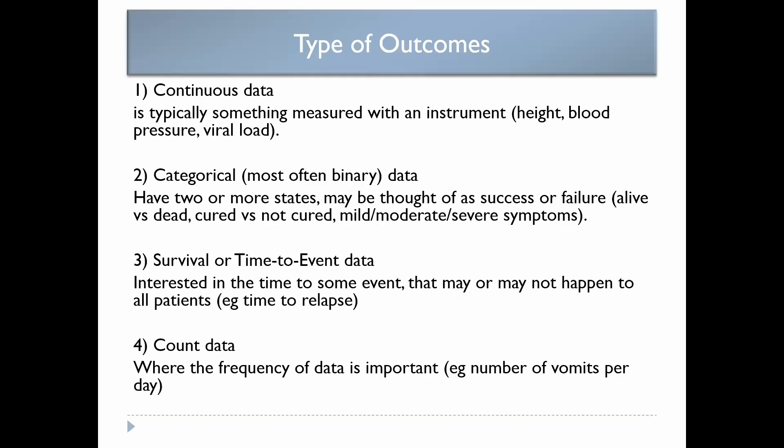The type of outcome involves four categories: one, continuous data; two, categorical data; three, survival or time-to-event data; and four, count data. Continuous data is typically something measured with an instrument — things like height, blood pressure, viral load — measured on a continuous scale. Categorical data has states; we most often use binary, such as patient alive versus dead or cured versus not cured. It could also be tripartite, such as mild, moderate, severe. Survival data is time to some event, which may or may not happen to all patients — time to relapse or time to death. Count data is where frequency matters, such as the number of vomits per day.